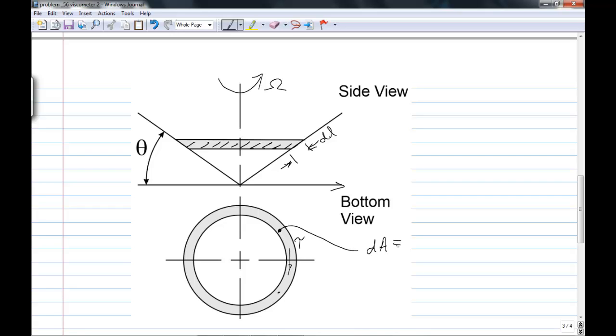The area here, dA, is the circumference, so 2 pi r, where r is the radius, times the incremental thickness. Now you might tend to think that's dr, but actually you've got to look up here, we're looking on the bottom view, you're seeing a projection of that view. But on the cone, the length is dL.